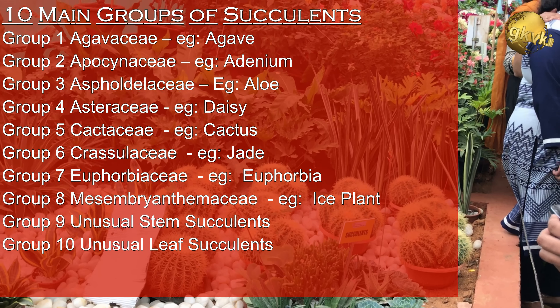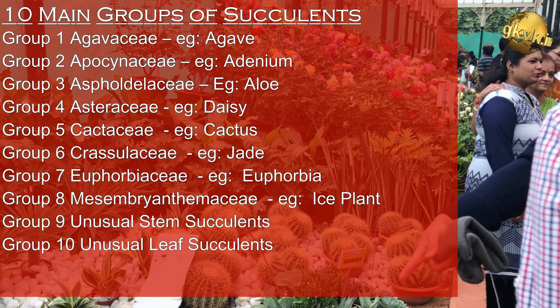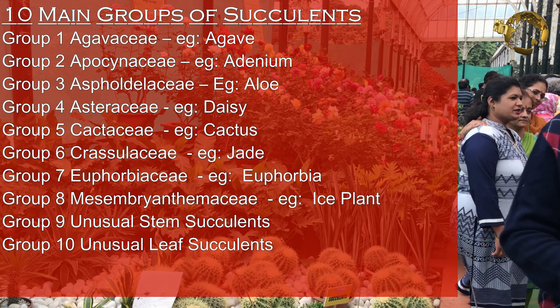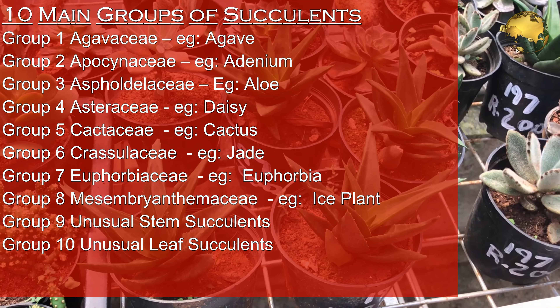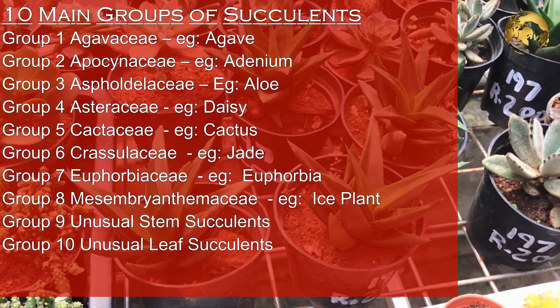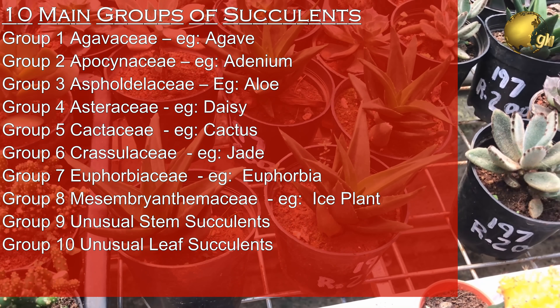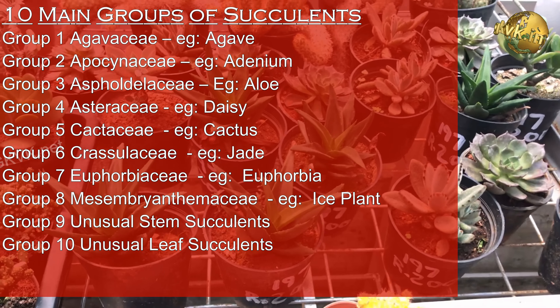Group 1: the Agavaceae family, i.e., Agave. Group 2: the Apocynaceae family, i.e., Adenium. Group 3: the Asphodelaceae family, i.e., Aloe Vera. Group 4: the Asteraceae family, i.e., Daisy.